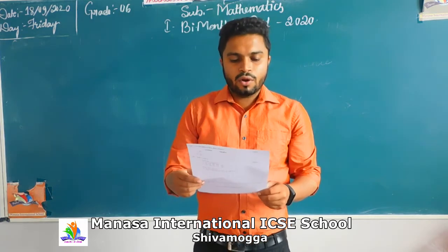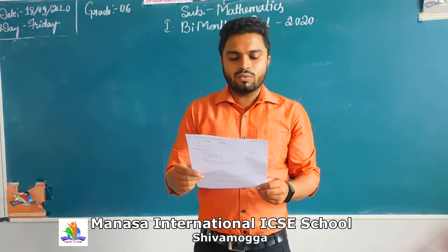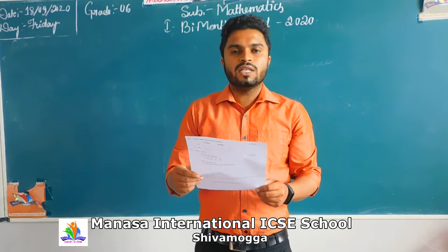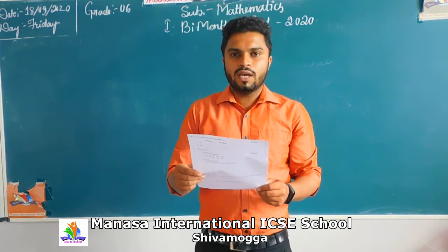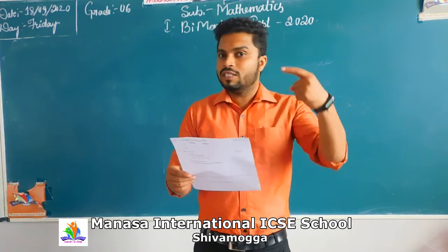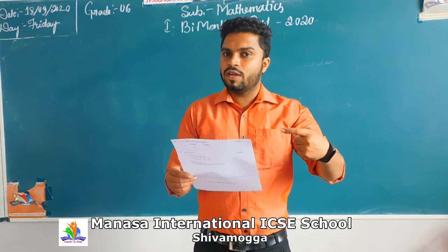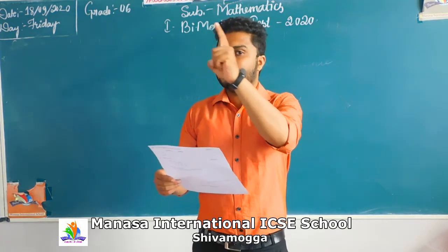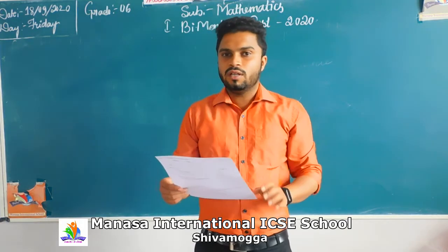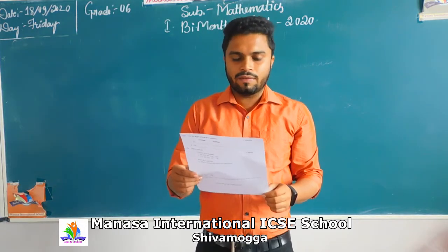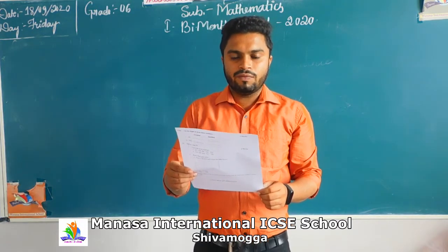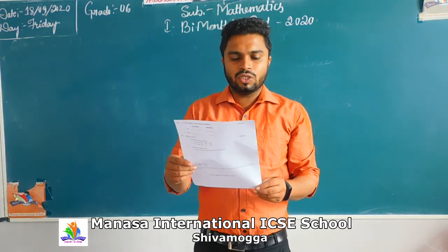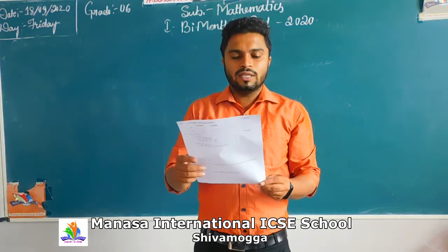Third heading: write the face value of each digit. Face value — you have to write. I have shown you what is place value and what is face value. Place value is 1 times 100; face value is the number itself. First question: 7, 5, 5, 3. Second question: 4, 6, 8.